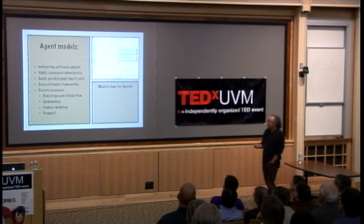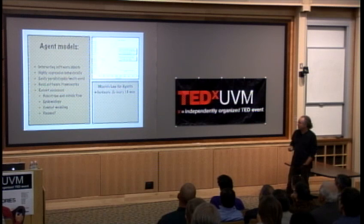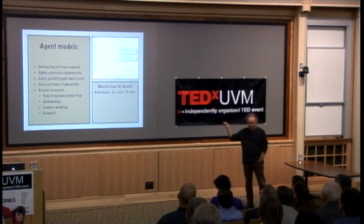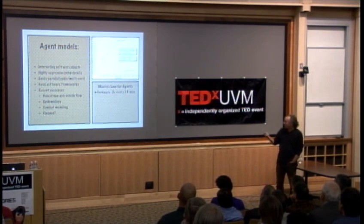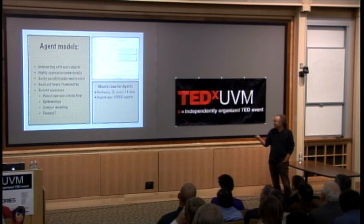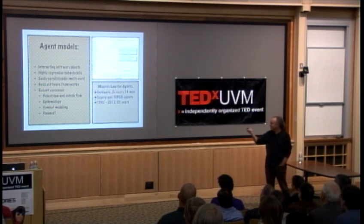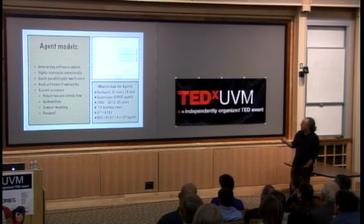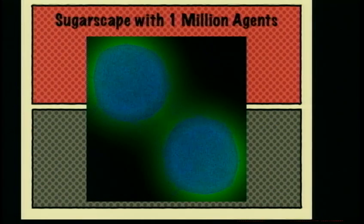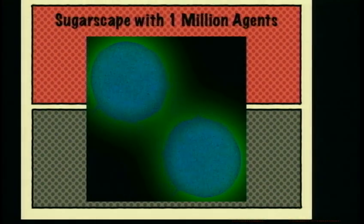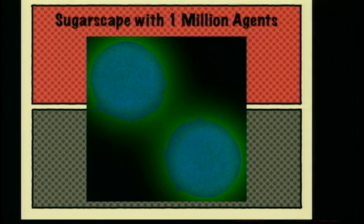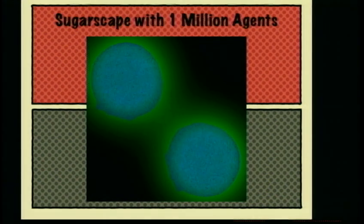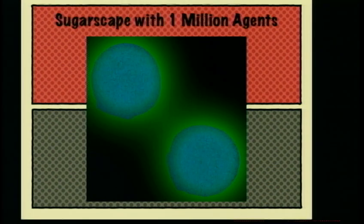Over the last couple of decades, we've had great advances in hardware. If we're getting a 2x increase in hardware every 18 months, and the original Sugarscape model was built back in 1992 — that's 20 years ago — we've had 13 doubling times since then. 2 to the 13th is 10,000. What does that give you? Sugarscape with one million agents. The main point is that in this case we're spending clock cycles on graphical rendering, but we can turn off the graphics and get more clock cycles available to run larger models.